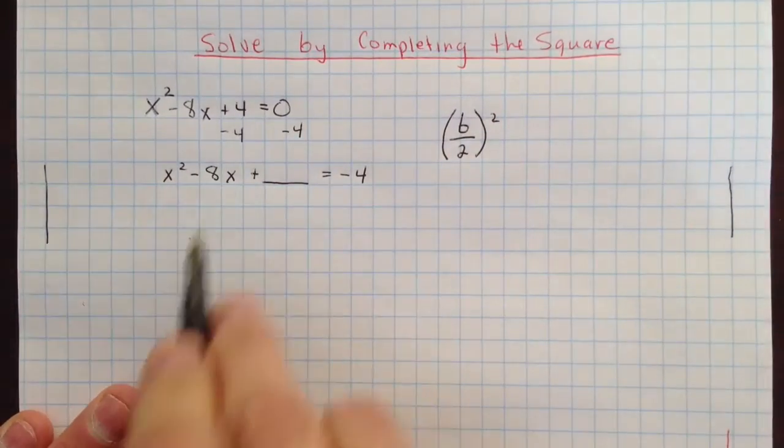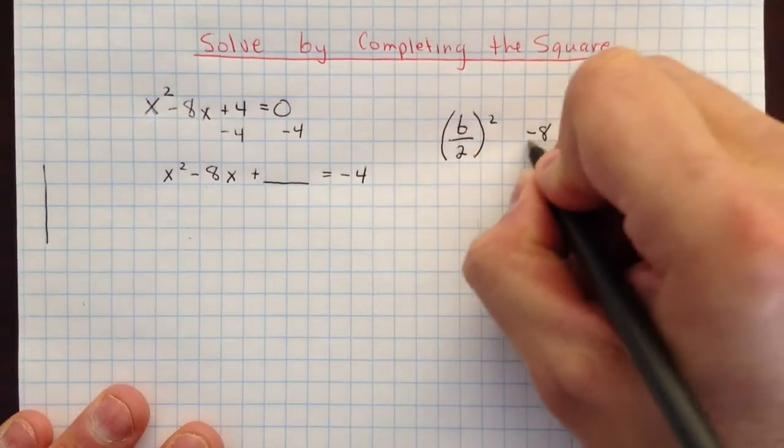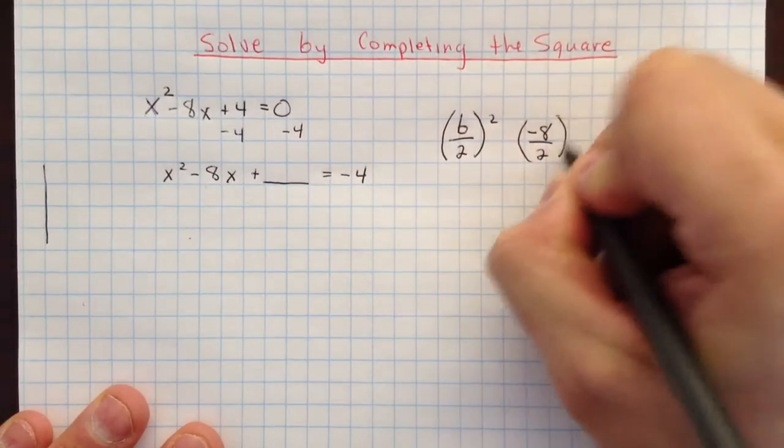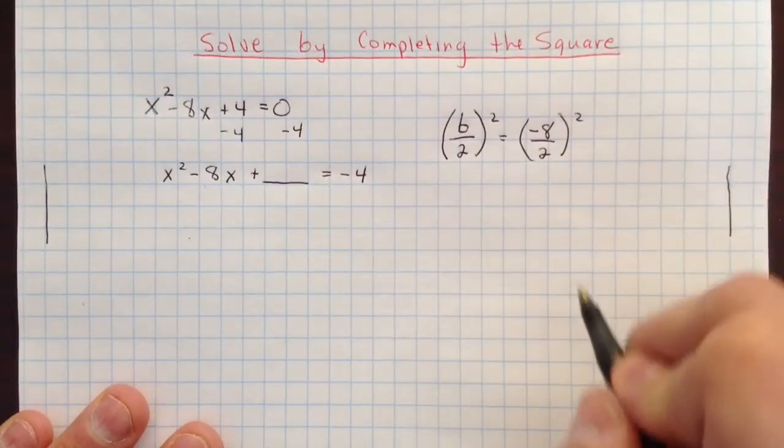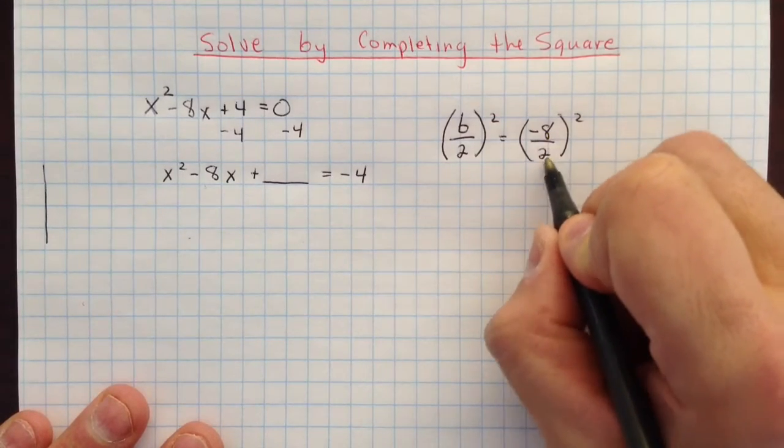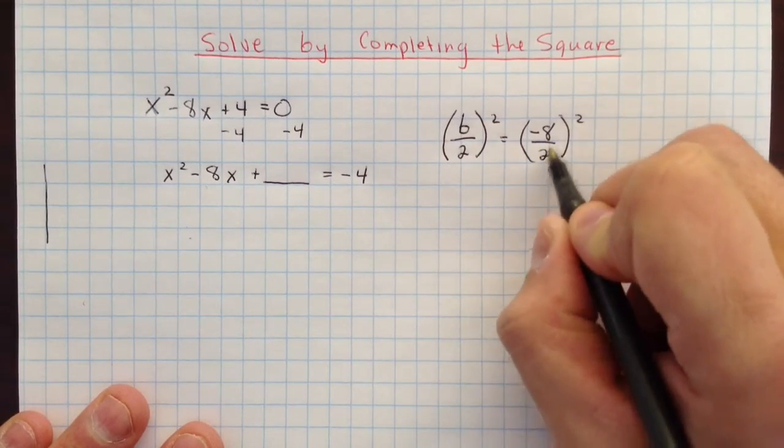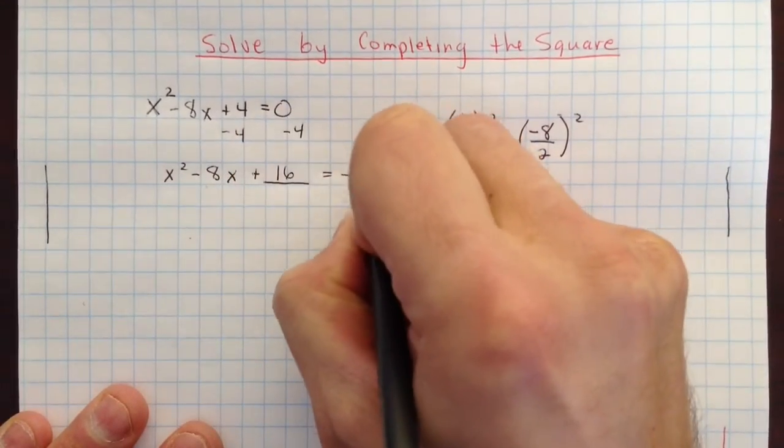In this case, b is negative 8, as you can see right there. So we'll take negative 8, divide it by 2, and square it. We'll write the whole thing down so you can see why in just a minute. So we start with negative 8 divided by 2, which is 4, and then 4 squared is 16. So we get 16 here, and we add 16 here.